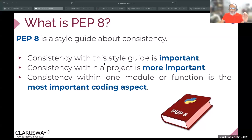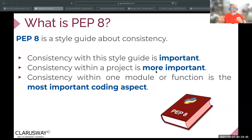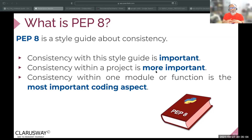When they say consistency with the style guide is important, they also say consistency within a project is more important. For example, if you're working in a team in a company, your team is going to have a writing format. They'll tell you how to name a variable for a specific value in a function, or how to name the connection when you connect to a database — please write it in this formatting style.